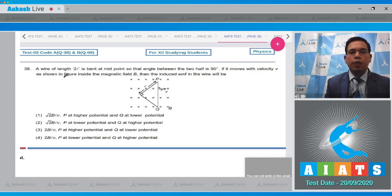Question number 38 states that a wire of length 2L is bent at the midpoint so that the angle between the two halves is 90 degrees. If it moves with a velocity V as shown in the figure inside the magnetic field B, then the induced EMF in the wire will be...